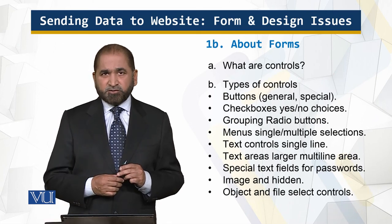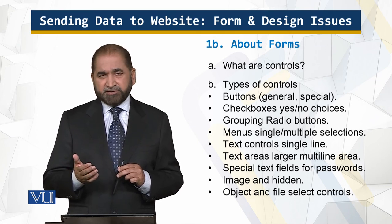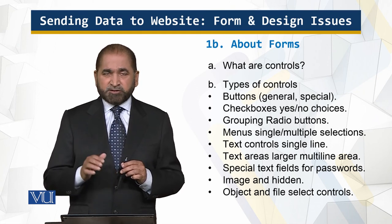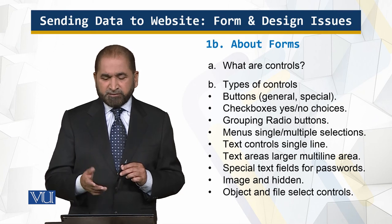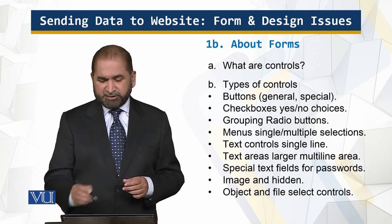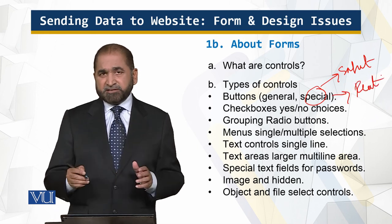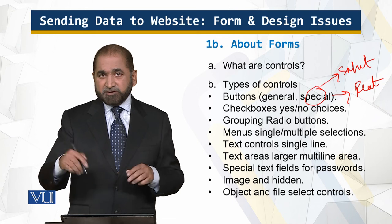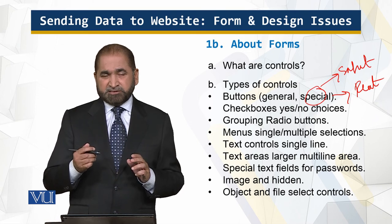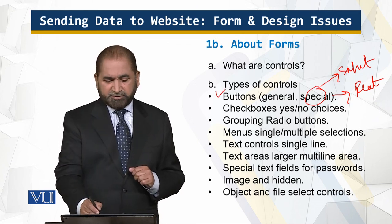The controls form a long list, as you can see on screen. In the subsequent modules, I'll be discussing and showing you these controls along with the code behind them. Very briefly, we have buttons — these can be general buttons or special buttons. Special buttons include submit and reset. With special buttons, remember, no data is passed. With general buttons, data is passed, or a command such as forward or backward can be associated. We also have checkboxes, which can have a yes or no choice.